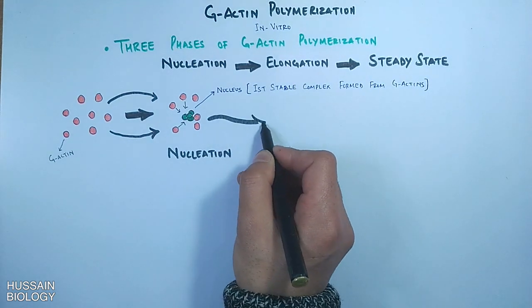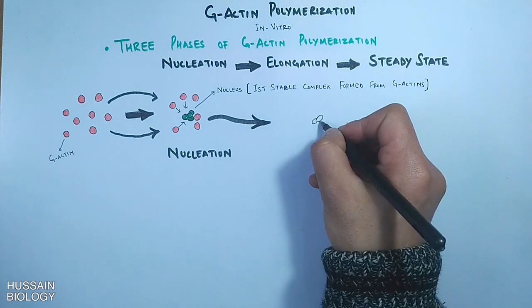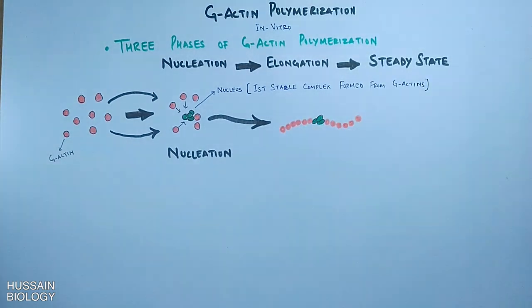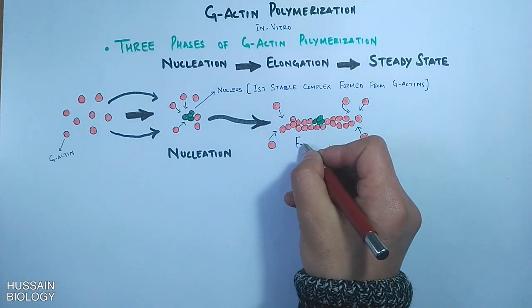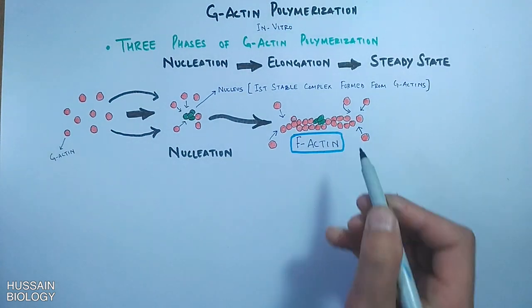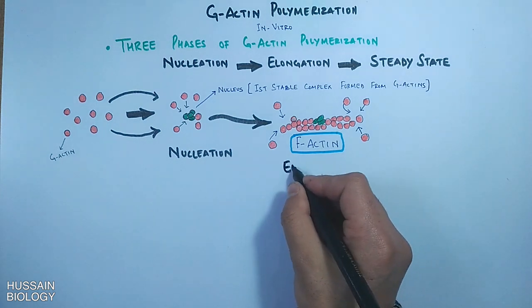Now next step is the elongation step, where we see that G-actin starts to polymerize into filaments as shown in the diagram. These nuclei are rapidly elongated in the second phase by the addition of subunits to both the ends of the filament.